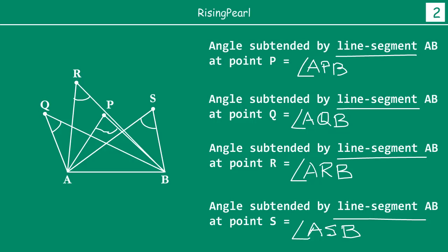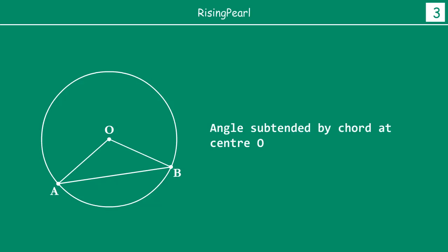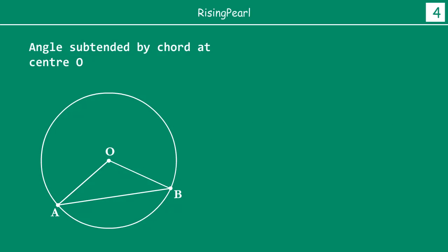Now, in the context of a circle, let's draw a circle. Here we have drawn a circle and taken any two points A and B. The angle subtended by the chord at the center: if we want to find out the angle subtended by chord AB at the center, we have to join OA and OB. So this will be the angle which is subtended by the chord or line segment AB at center O.